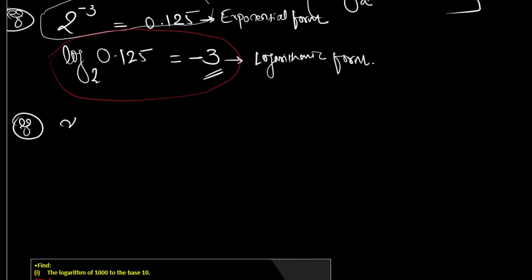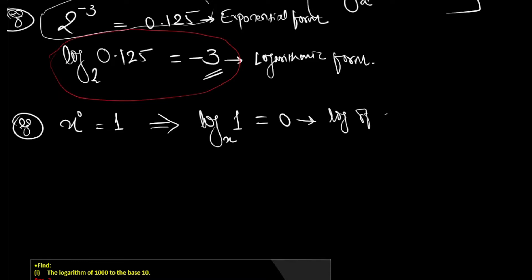If x raised to 0 equals 1, we can convert it: log of 1 to the base x is equal to 0. We can generalize this: log of 1 to any base is always 0.